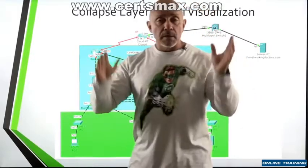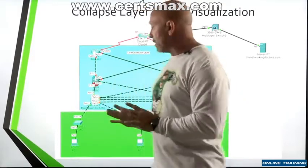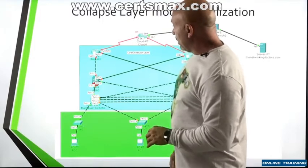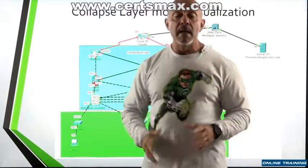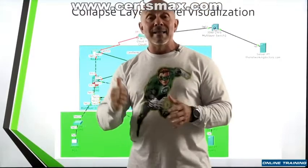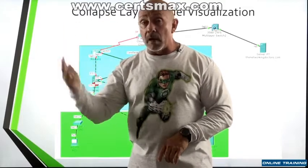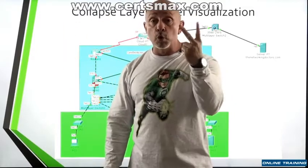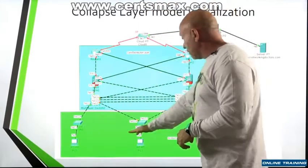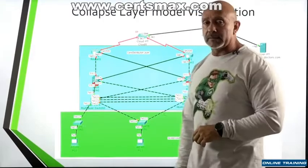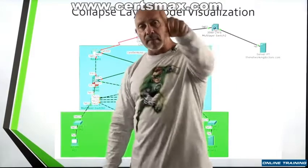To put it simply again: there's no lab in this one. The collapse core went from a Cisco three-layer model to a Cisco two-layer model — the core-distribution layer and the access layer. That's it, that's all there is to it. I hope you enjoyed it. I'll see you in the next one.